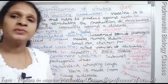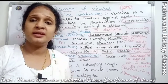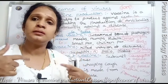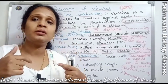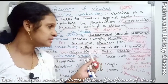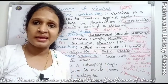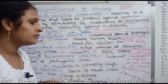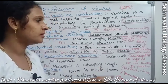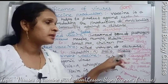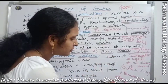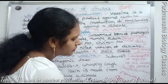Hepatitis A is related to liver damage, showing symptoms like jaundice — yellow skin, yellow eyes, and dark urine. Polio causes paralysis, and its vaccine is the OPV. Rabies is caused by a dog bite.